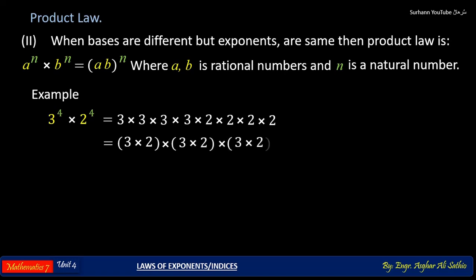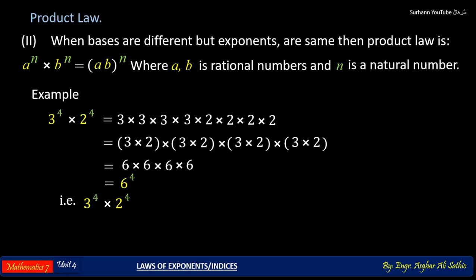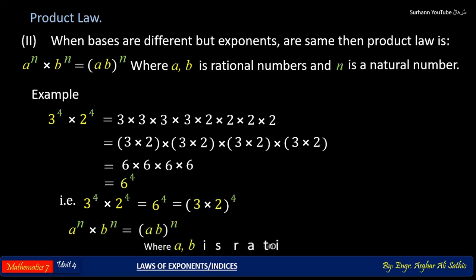All members are multiplying each other. If we rewrite them, we can make pairs of 3 and 2. By multiplying 3 and 2 we get 6, so 6 is multiplying 4 times — meaning 6 to the power 4. This means when exponents are the same and bases are different, we multiply the bases and the exponent remains the same. This example proves this condition.